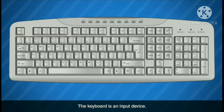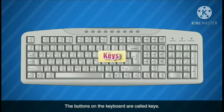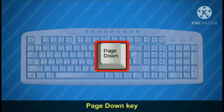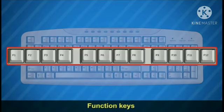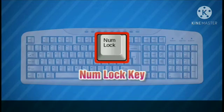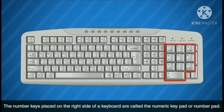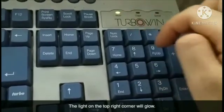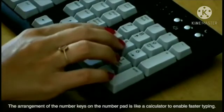The keyboard is an input device. When we type using the keyboard, it gives input to the computer. The buttons on the keyboard are called keys. We shall learn about some special keys: number lock, page down key, home key, end key, escape key, page up key, and function keys. The number keys placed on the right side of a keyboard are called the numeric keypad or number pad. To type numbers using the number pad, press the number lock key — the light in the top right corner will glow.